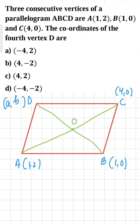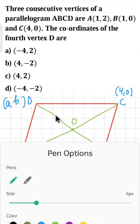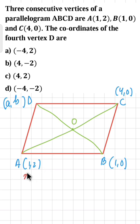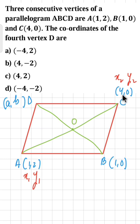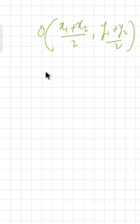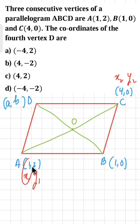Now let's understand what x1, y1, x2, y2 are here. For point A, we assign x1 and y1; for point C, we assign x2 and y2. So x1 = 1, x2 = 4, y1 = 2, and y2 = 0. Now writing out the formula: O = (x1 + x2)/2, so that is (1 + 4)/2. Let's verify: x1 is 1, x2 is 4, y1 is 2, y2 is 0.